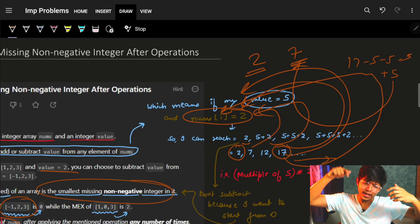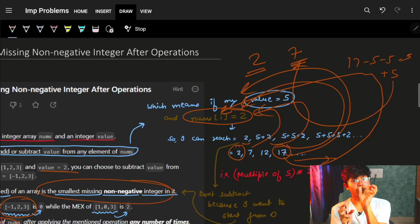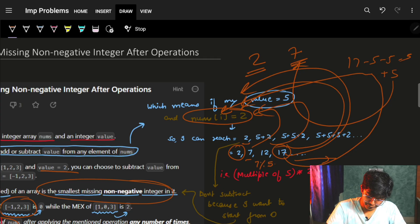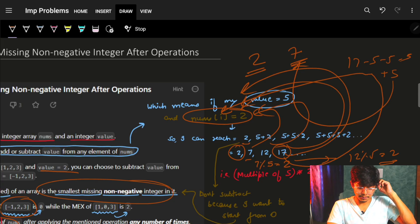So ultimately, I'll just try to bring down every number to the smallest non-negative number by the remainder itself. It's just a remainder, which means if I have a 7 mod 5, it's nothing but 2. A 12 mod 5 is nothing but a 2. So it's just a remainder of every number.